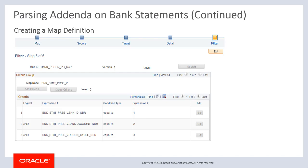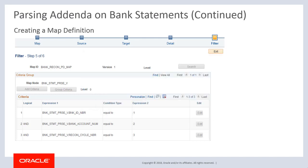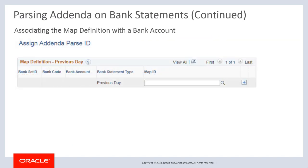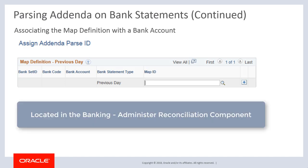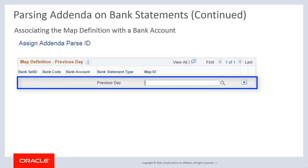Next, use the filter page of the map definition to specify bank ID, bank account number, and statement ID filter conditions. To associate a specific map ID with one or more bank accounts, use the Assign Addenda Parse ID page. In the first method, if you do not want to configure addenda parsing, leave the default grid row unpopulated.